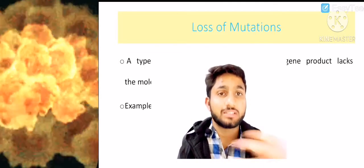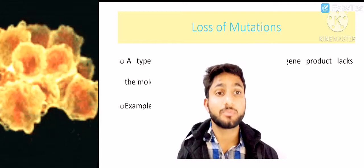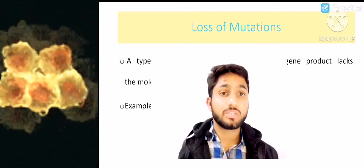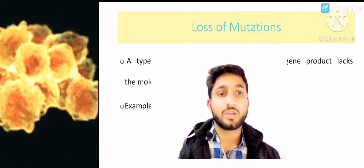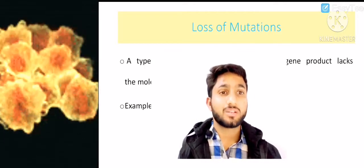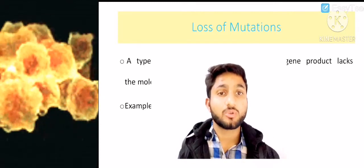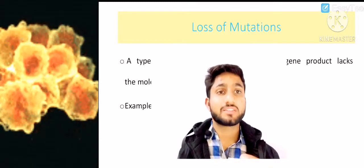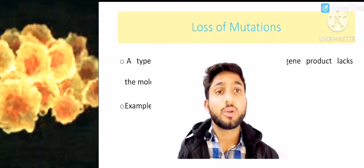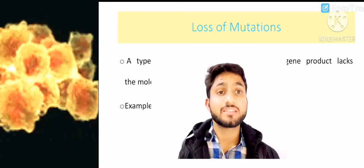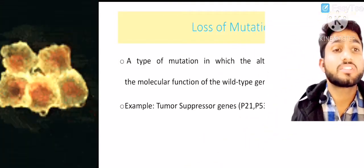If proteins are produced in excess, the cell is abnormal. If proteins are produced in lesser amounts, the cell is also abnormal — neither is beneficial for the body. In loss of function mutations, some genes lose their function to produce protein at a normal level. Cellular proteins are under-produced, cells become weak and unable to perform their function properly. Such mutations are defined as loss of function mutations.